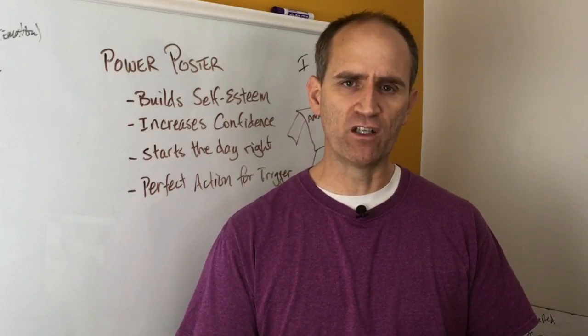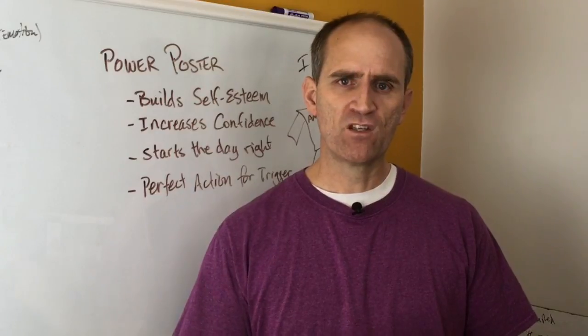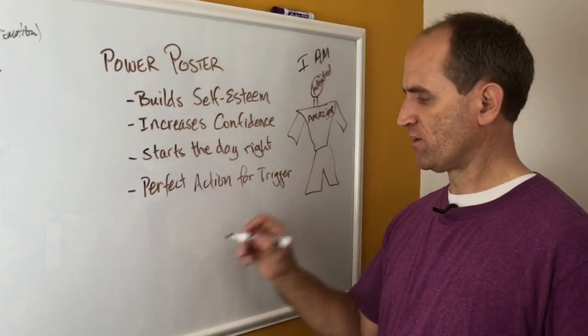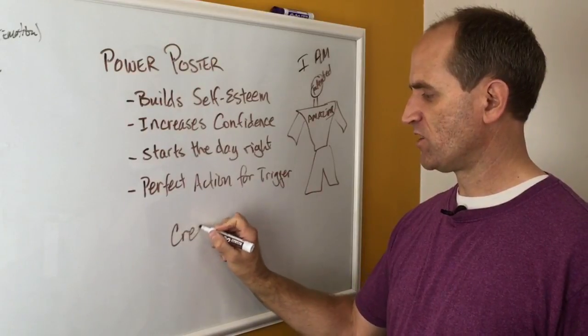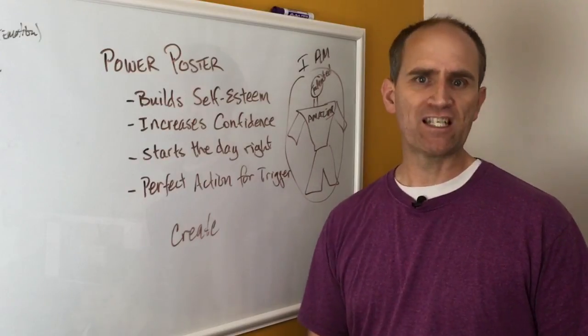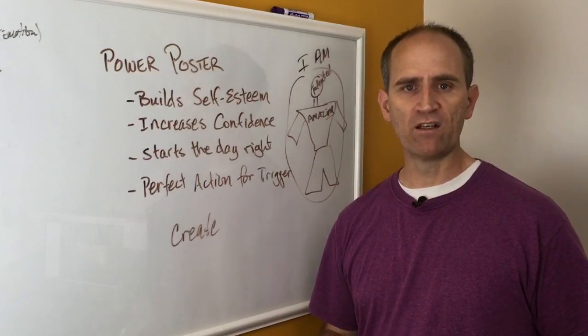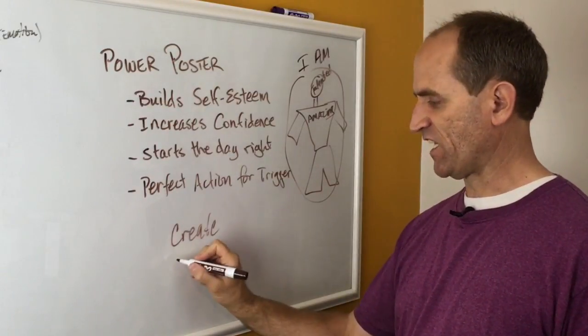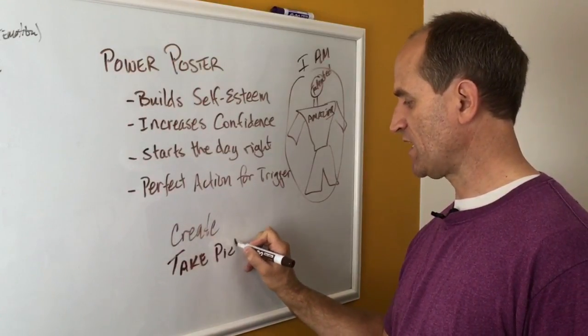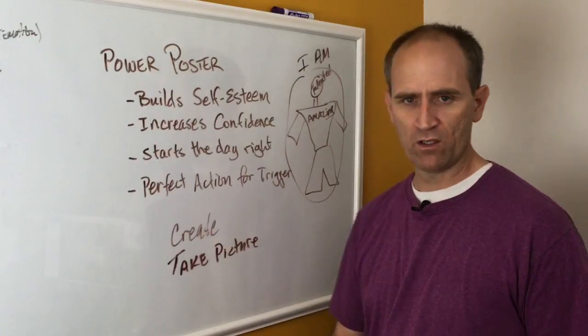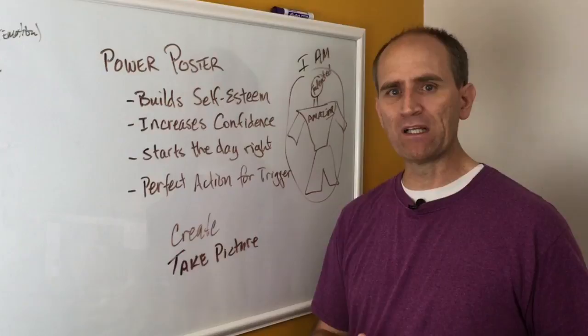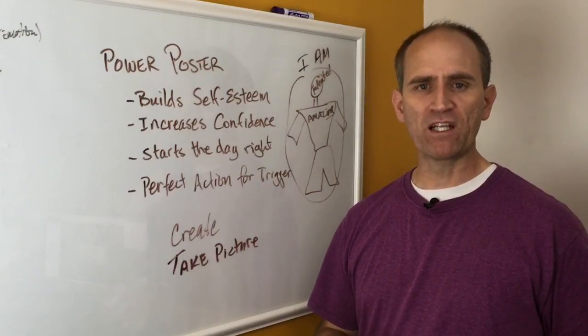And you do that by looking at your empower poster that you have created, that you take a picture of and put it on your phone. So here's your action items. One: first create your Power Poster. You've got to have this created. You can't just think about it in the last minute. You have to have it created. Second: you're going to take a picture of it. Take a picture so that it is on your phone, that you are able to access it anytime, anyplace, anywhere at the click of a button.